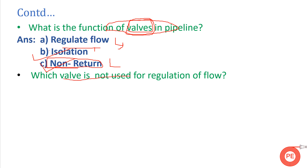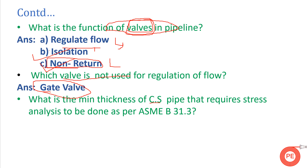Which valve is not used for regulation of flow? The gate valve is not used for regulation. A gate valve has a soft seat and a wedge, and if used for flow regulation, the flow striking the seat causes damage to it, making the valve unable to remain leak-proof and eventually causing it to leak. So it cannot even serve its isolation purpose. For regulation, butterfly or globe valves are used.